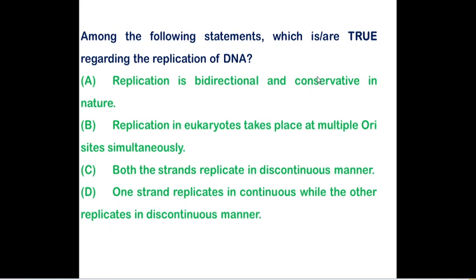Among the following statement, which of the following is true regarding the replication of the DNA? First option is that replication is bidirectional and conservative in nature. Here they didn't mention whether they are speaking about prokaryotic replication or eukaryotic replication. They had simply mentioned about replication. Option A is correct. Because in prokaryotic, you can be able to find the replication is conservative, whereas in eukaryotic it is semi-conservative. Next statement is replication in eukaryotic take place at multiple origins simultaneously. Of course, it will be occurring in multiple origins, simultaneously will be occurring. Option B is also correct.